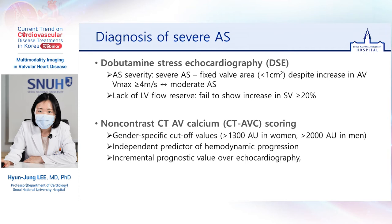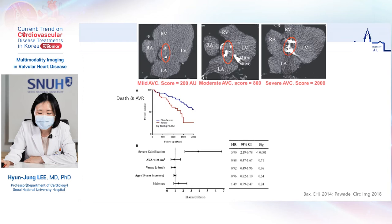Advanced calcification strongly suggests severe AS. There are gender-specific cutoffs for diagnosing severe AS. As fibrosis plays a greater role in women, the cutoff value for calcification is lower in women. The AV calcium score also strongly predicts future hemodynamic progression and has an independent prognostic value over echocardiography. This is an example of AV calcium scoring by non-contrast CT. The first patient has mild AV calcification and an AV calcium score of 200 Agatston units. On the other hand, the third patient has severe AV calcification with an AV calcium score of 2,000 Agatston units, which is above the threshold for severe AS.